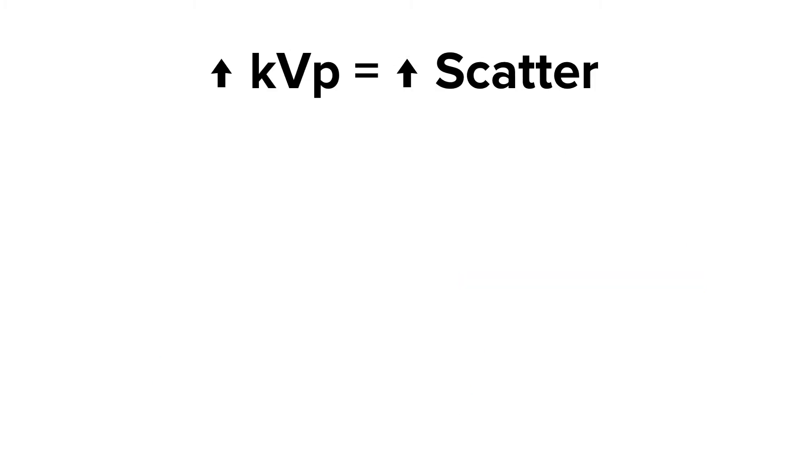Finally, increasing KVP increases the amount of scatter produced, thus increasing the amount of scatter that will reach our image receptor.